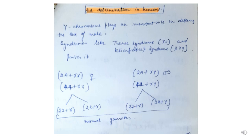When we discuss sex determination in humans, females have two X chromosomes as sex chromosomes, while males have X and Y. The Y chromosome plays an important role in determining the sex of males. Turner syndrome occurs when an individual has the genetic condition XO — that is, absence of the Y chromosome. If there is an extra X chromosome present along with X and Y, it leads to Klinefelter syndrome.